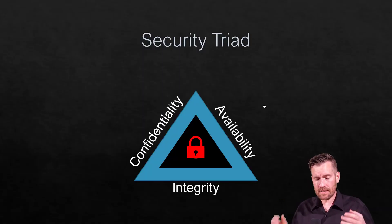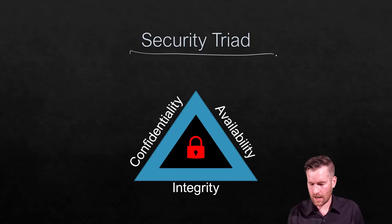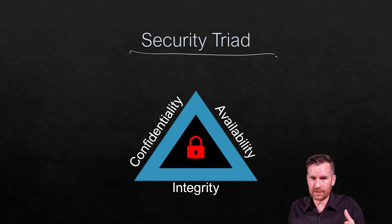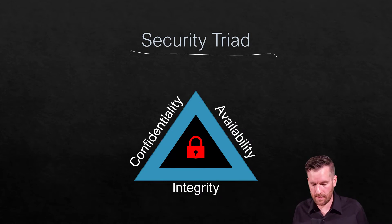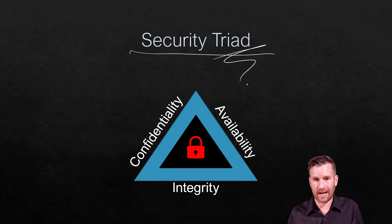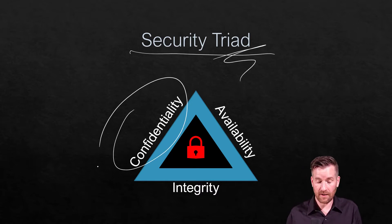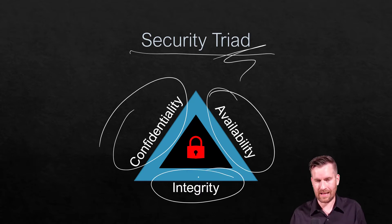Within the security community we have something called the security triad. The security triad is a way to view what is the responsibility of the security department, or of whoever is responsible for security within the company. It comes in three parts — hence the word triad — confidentiality, availability, and integrity.